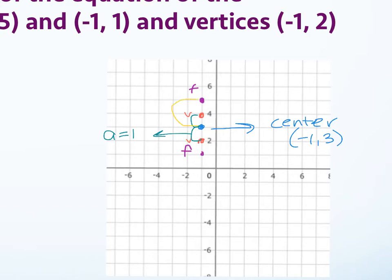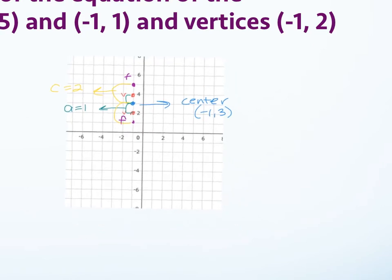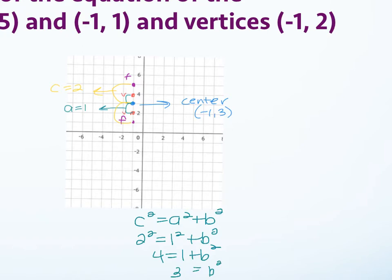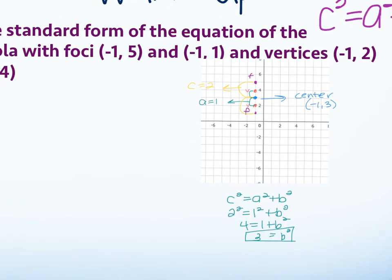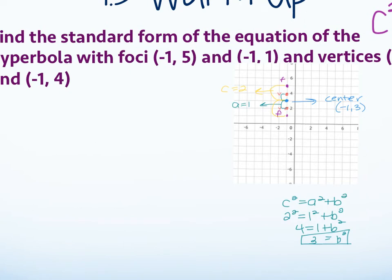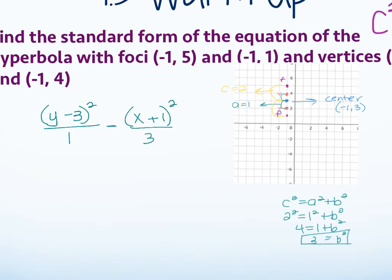C is 2, because it's center to foci. The only other piece of information I need is B. So if c squared equals a squared plus b squared, and c is 2 and a is 1, then 4 equals 1 plus b squared, and b squared equals 3. Now I have everything. Since it's vertical: y minus 3 squared over 1 minus x plus 1 squared over 3 equals 1.